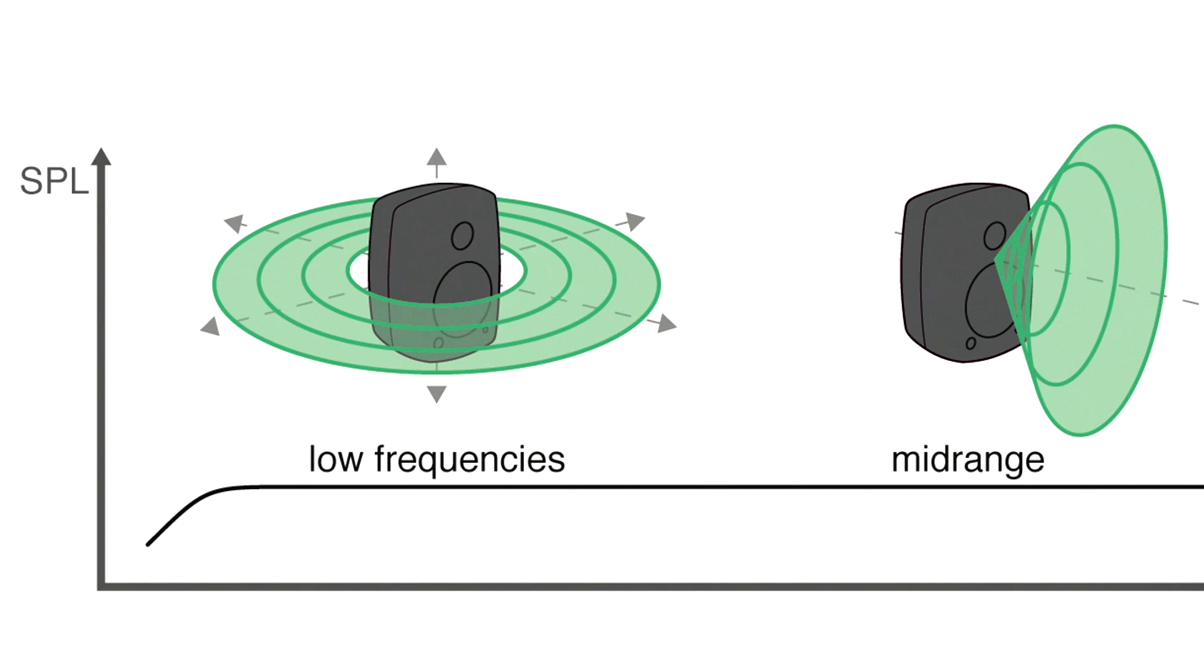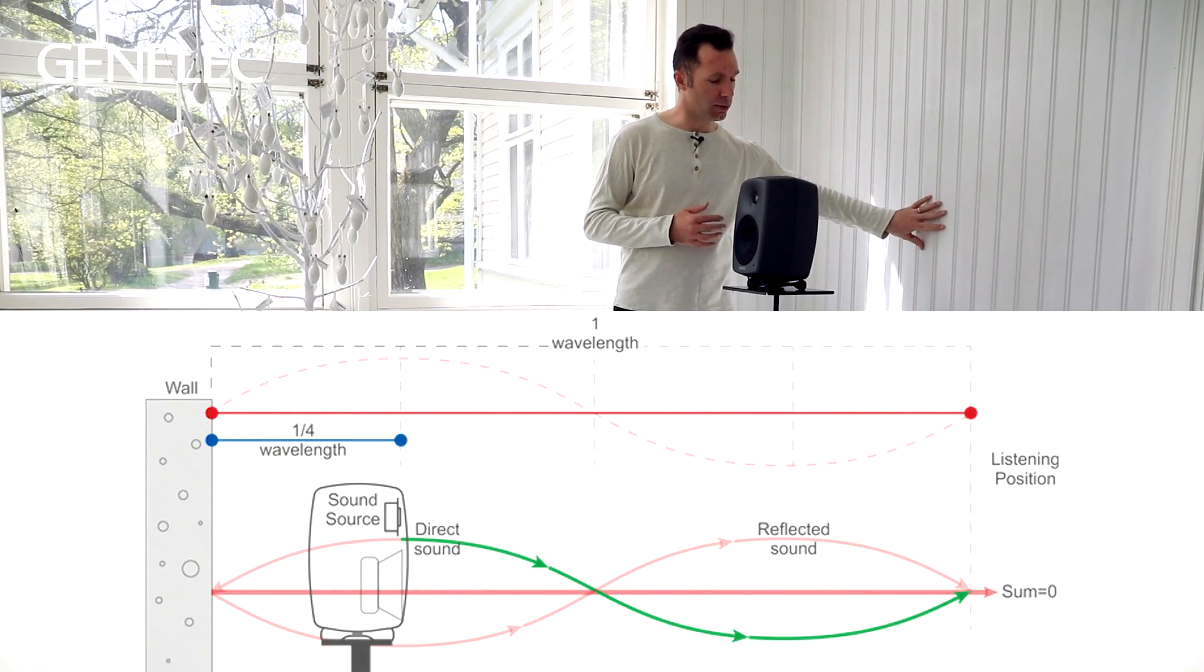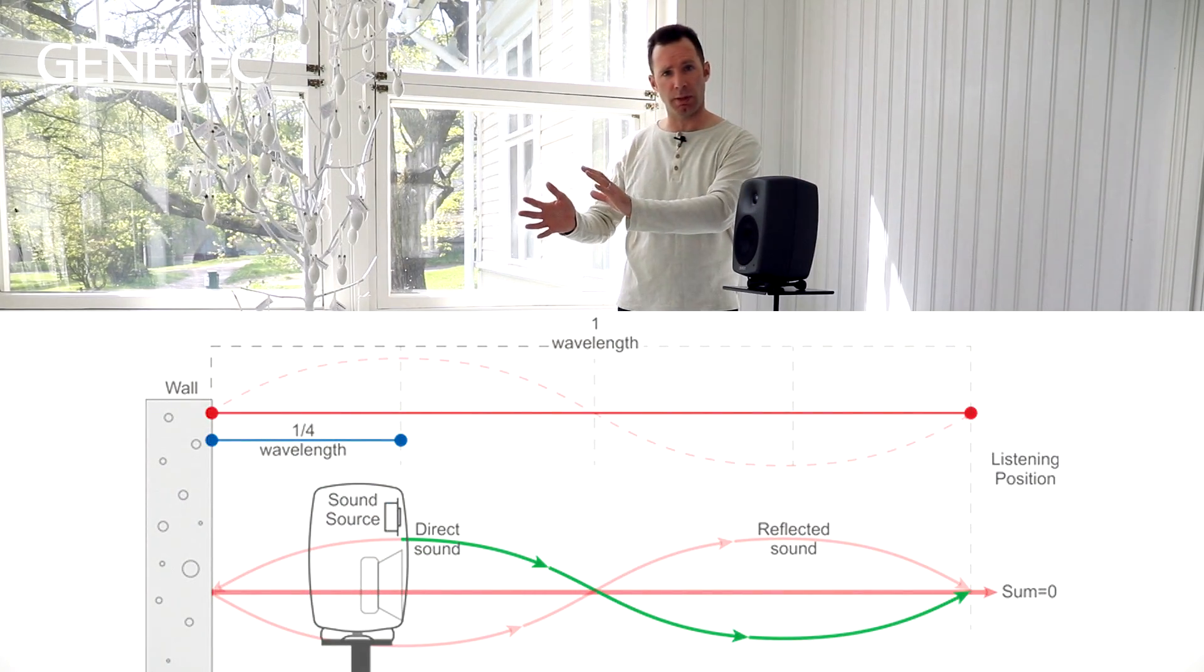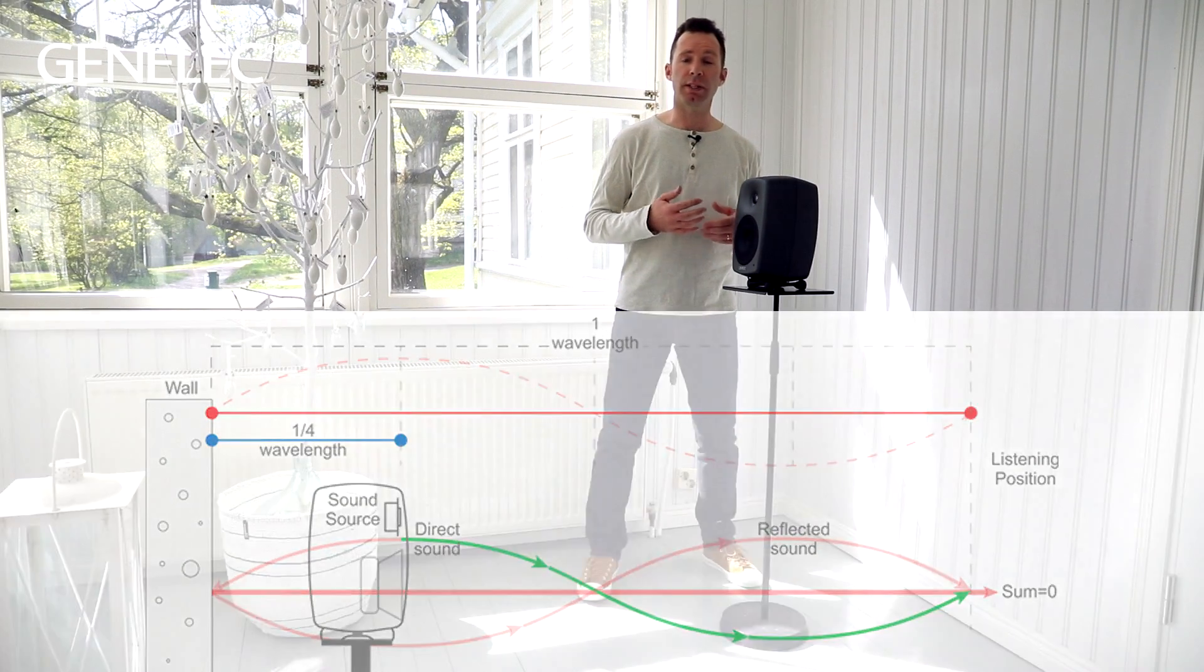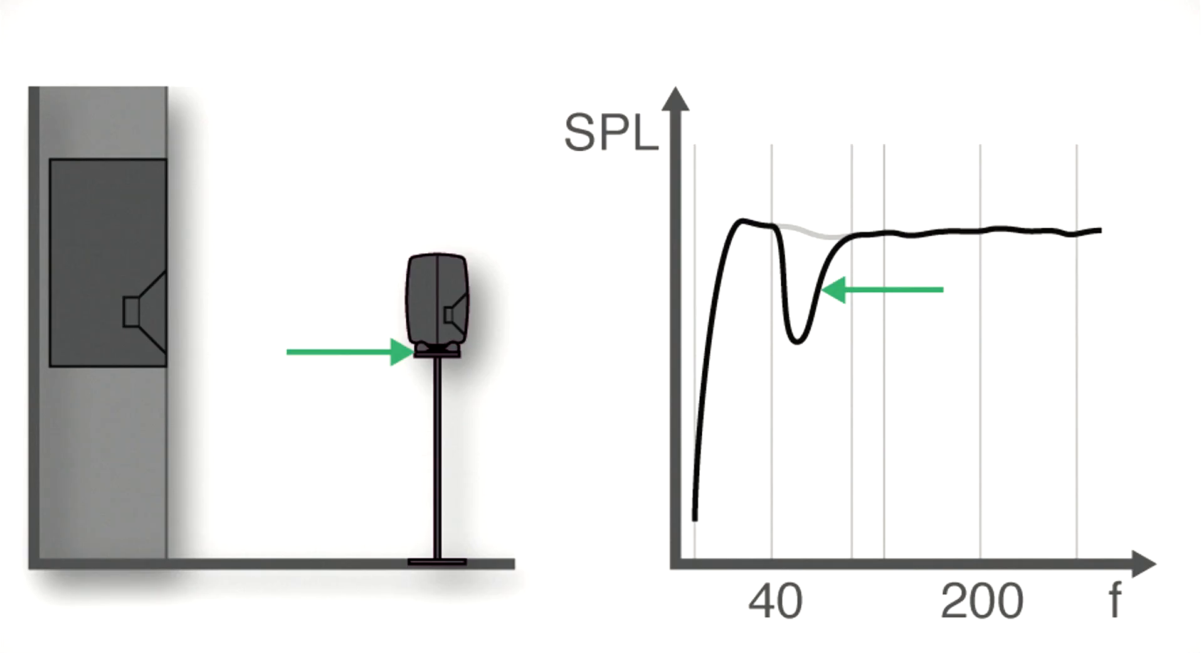A loudspeaker is omnidirectional at low frequencies, which means that it radiates as much backwards as it does forwards. The wave going backwards reflects off the rear wall and combines with the forward going wave. At frequencies where these waves are out of phase, we get destructive interference causing dips in the frequency response.